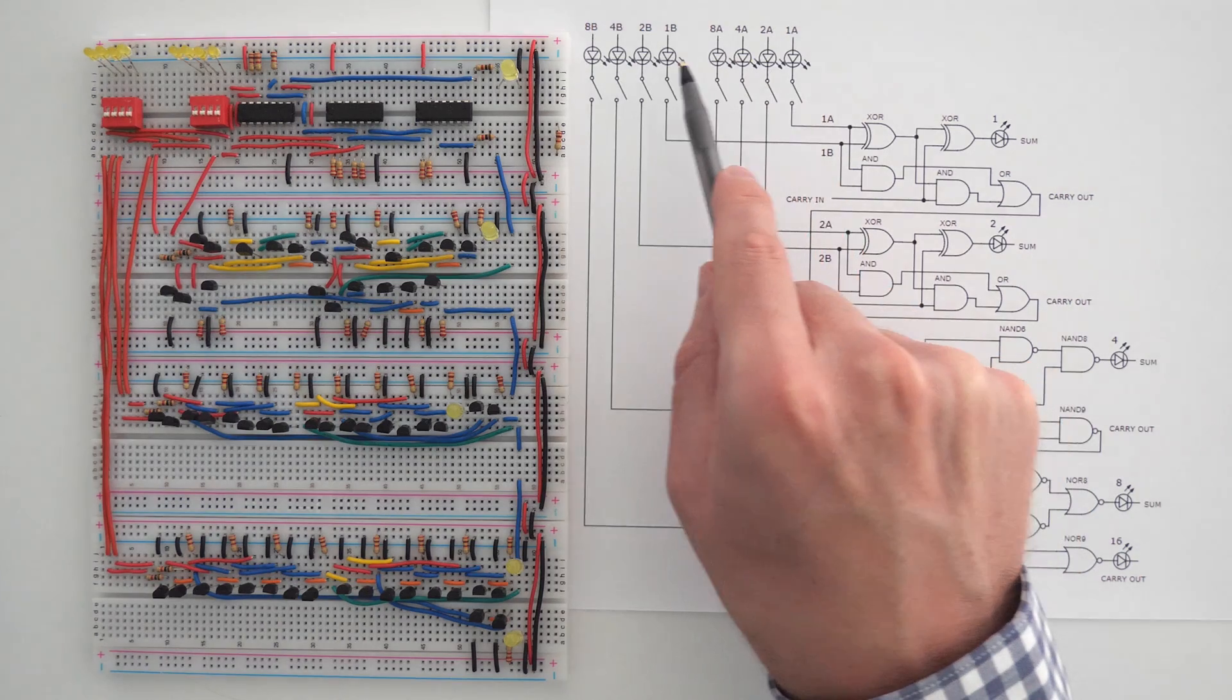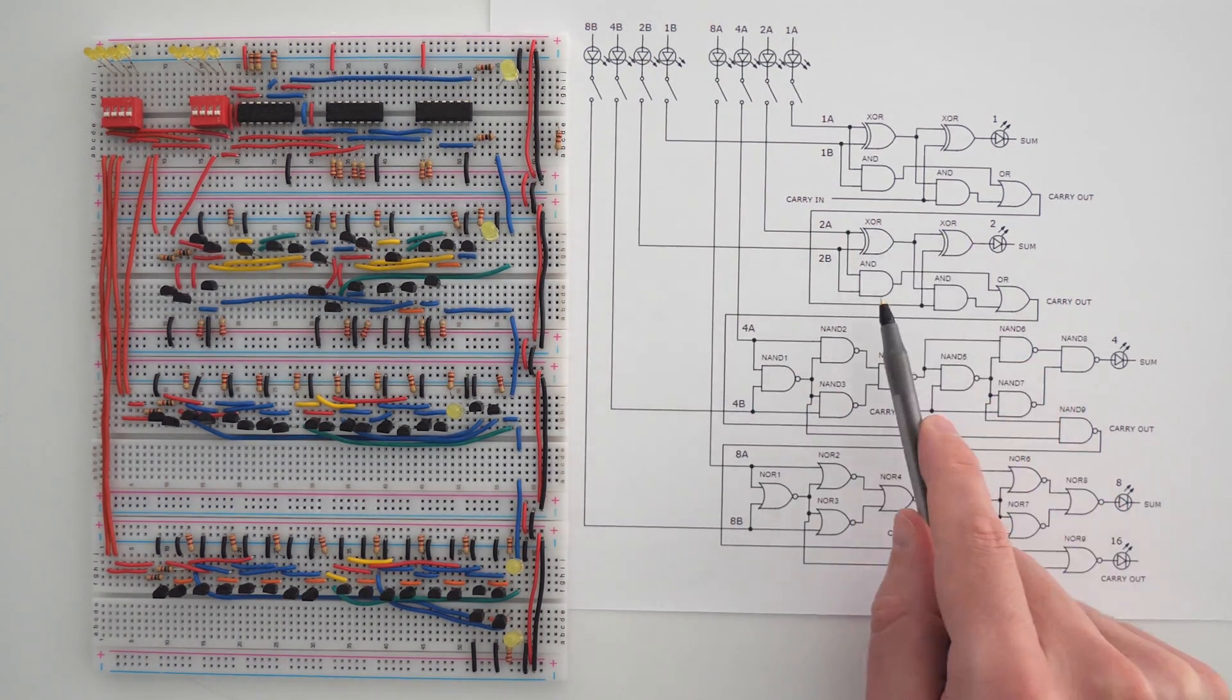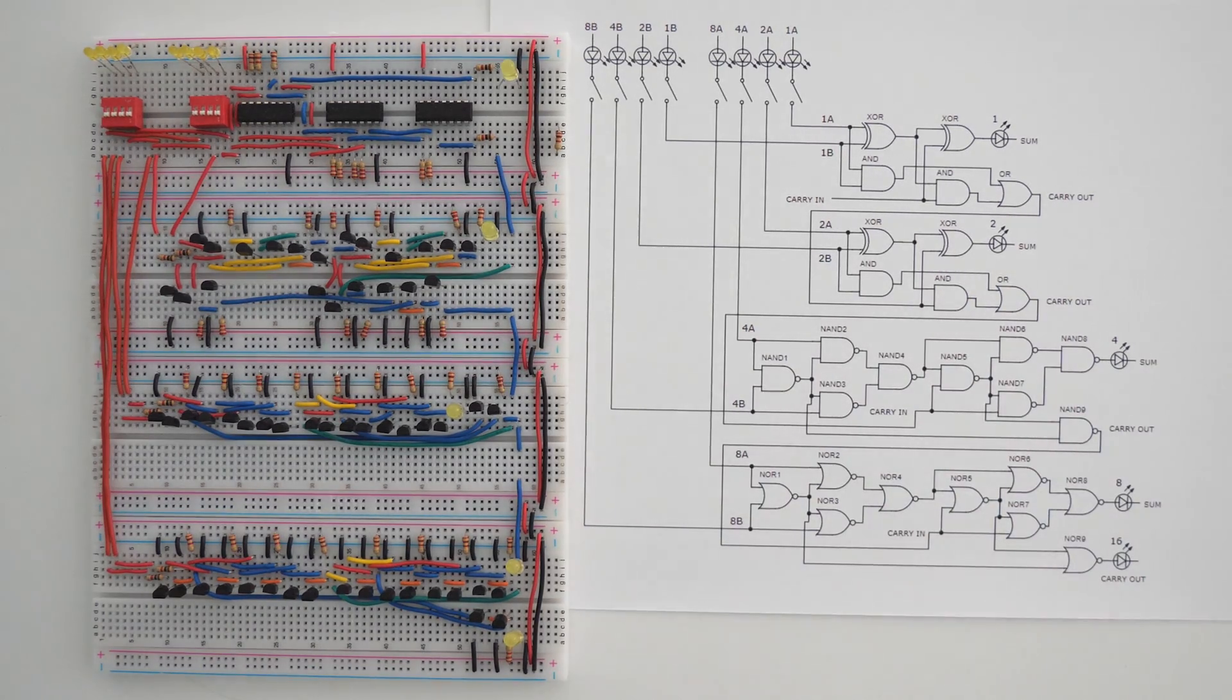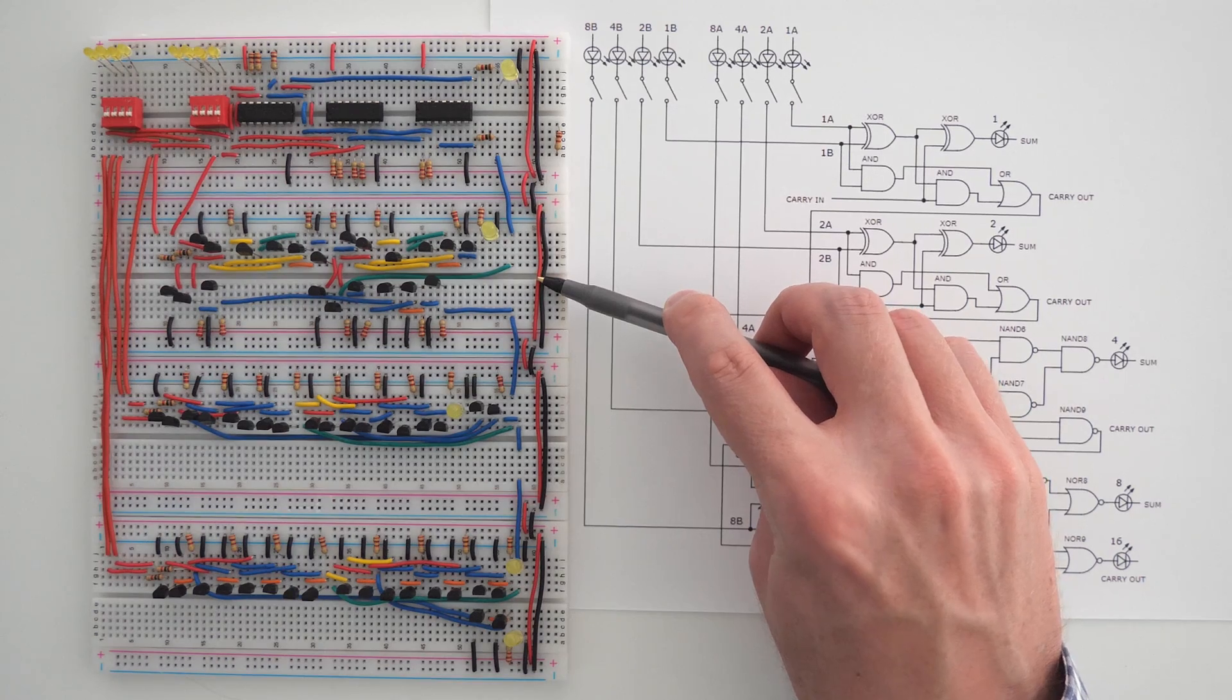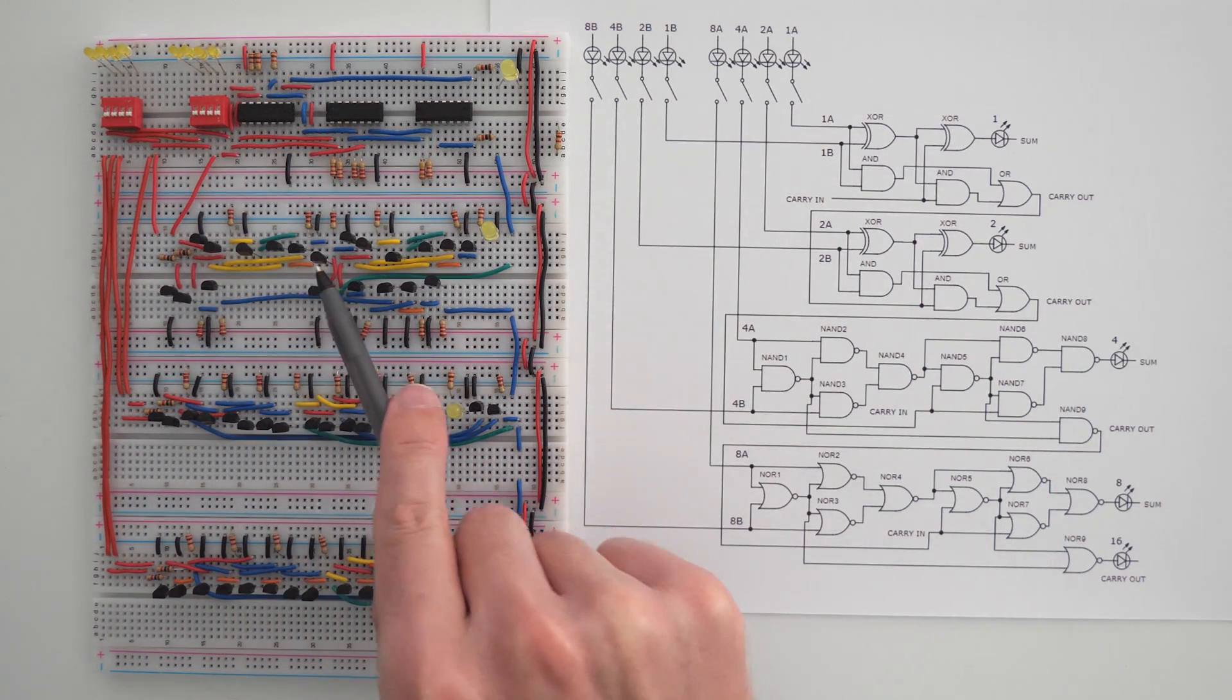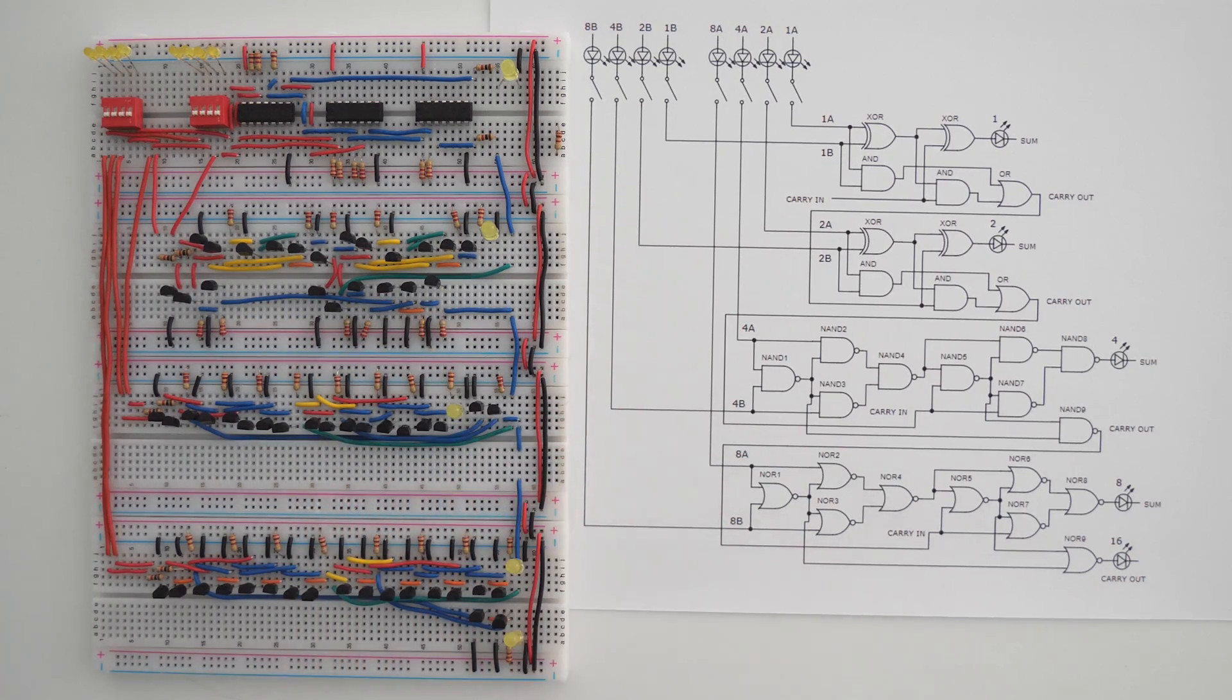And then we have inputs 2A and 2B that feed into the second full adder, which is also made with two exclusive OR gates, two AND gates, and an OR gate. So if you look right here, we built these using individual transistors. We have exclusive OR gate 1, exclusive OR gate 2, AND gate 1, AND gate 2, and then our OR gate.